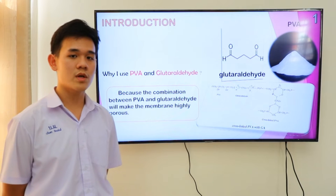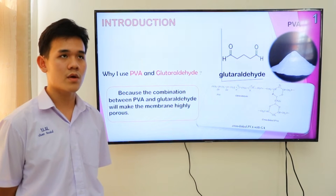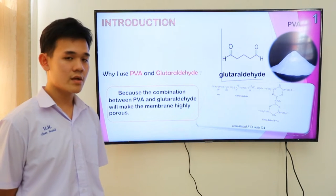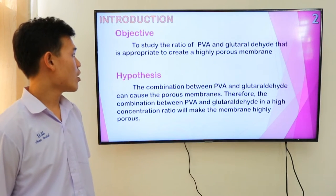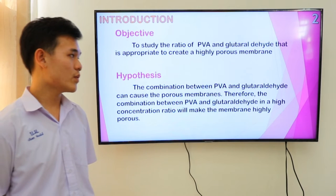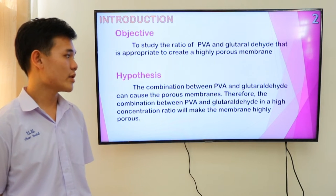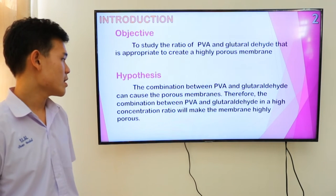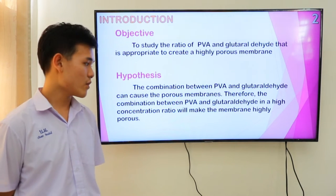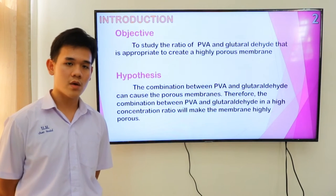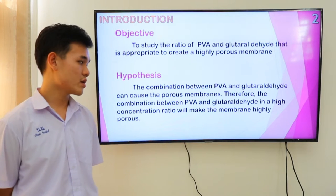Introduction: Why I use polyvinyl alcohol and glutaraldehyde? Because the combination between polyvinyl alcohol and glutaraldehyde will make the membrane highly porous. Objective: to study the ratio of polyvinyl alcohol and glutaraldehyde that is appropriate to create a highly porous membrane. Hypothesis: the combination between polyvinyl alcohol and glutaraldehyde in a high concentration ratio will make the membrane highly porous.